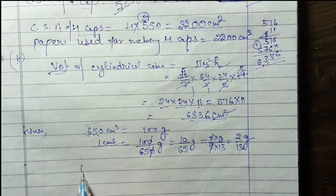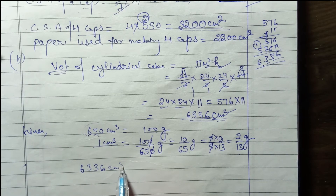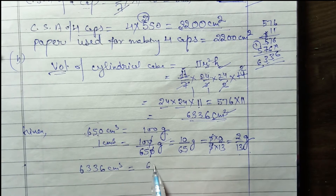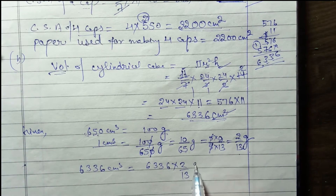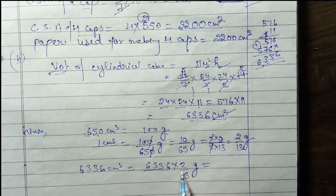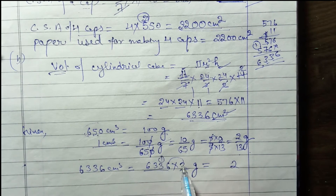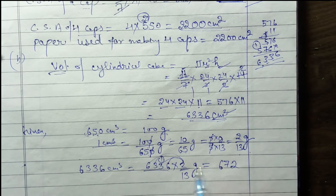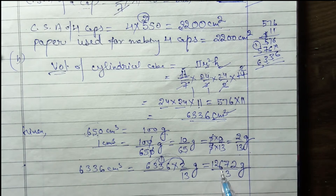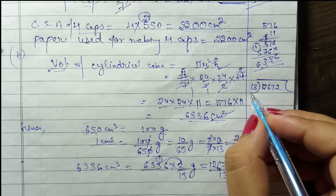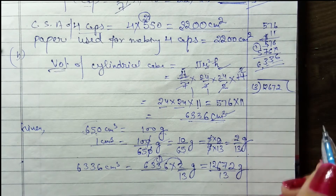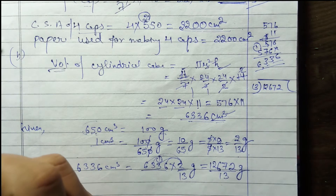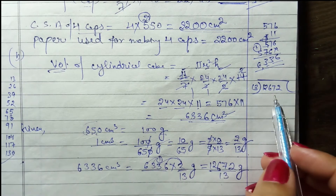Toh 6336 cm³ kitne gram hoga? 6336 × (2/13) gram. Sabse pahle 6336 × 2 = 12672. Ab 12672 ko 13 se divide karte hain. 13 ka table likh lete hain.